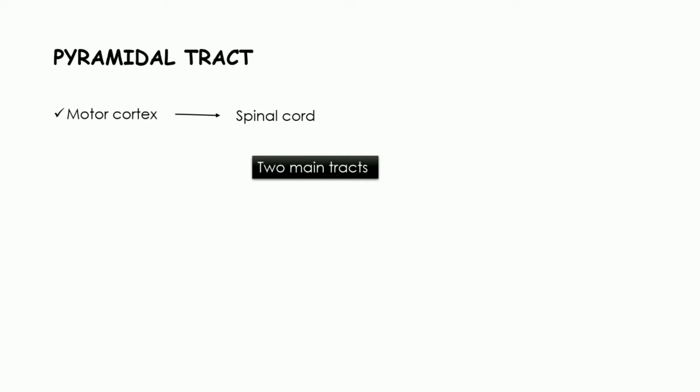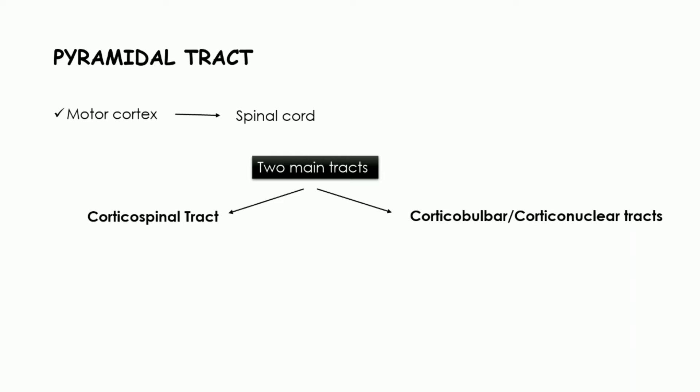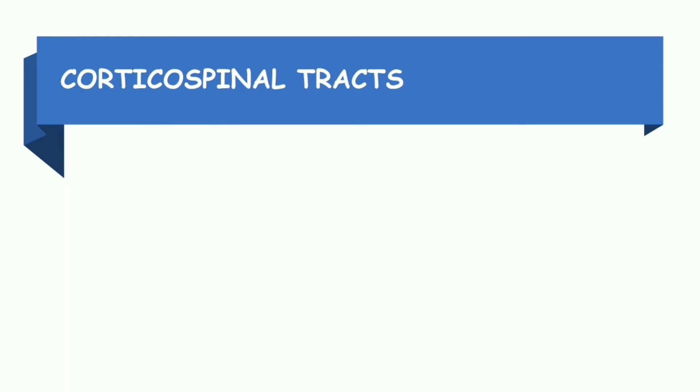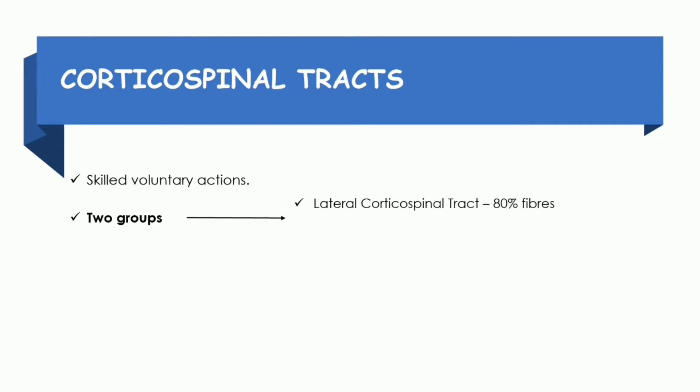The pyramidal tract comprises two main tracts: the corticospinal tract and the corticobulbar or corticonuclear tracts. When we talk about pyramidal tracts, we are most commonly referring to the corticospinal tracts — these terms are very commonly used interchangeably. The corticospinal tracts regulate the skilled voluntary actions of human beings and are the most important descending tracts. They are further divided into two groups: the lateral corticospinal tract comprising 80% of the total fibers, and the anterior corticospinal tract comprising 20%.